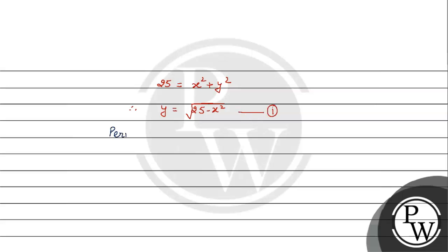Now let's find the perimeter. The perimeter is the sum of all three sides. We represent the perimeter as P. Our function is P equals h plus x plus y. h is given as 5, and y we found from equation one. So P(x) equals 5 plus x plus square root of (25 minus x squared). This is our function P(x).